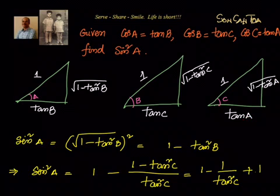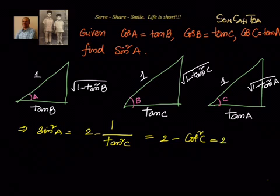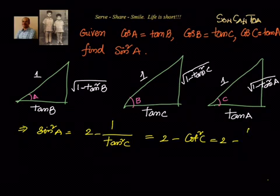Now let's go to the third triangle to get everything back in terms of A, so we can form a quadratic equation. sin²A equals 2 minus cot²C. From the last triangle, cot C is adjacent over opposite, so cot²C equals tan²A divided by (1 minus tan²A).